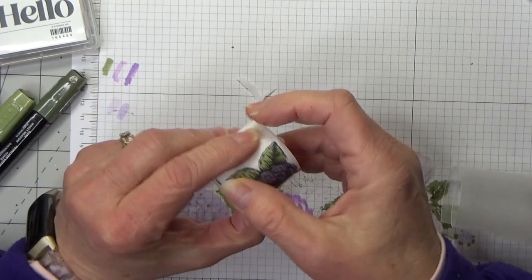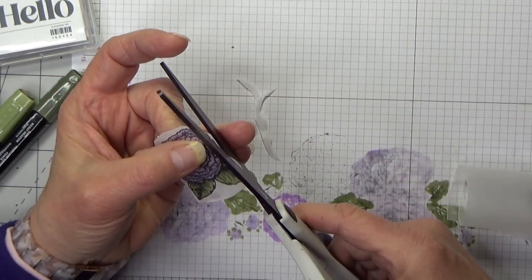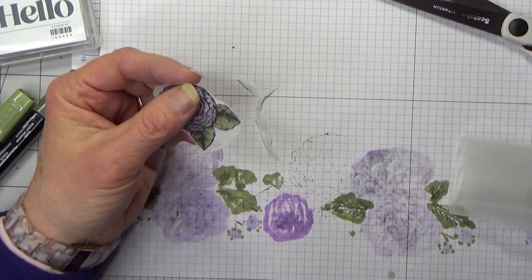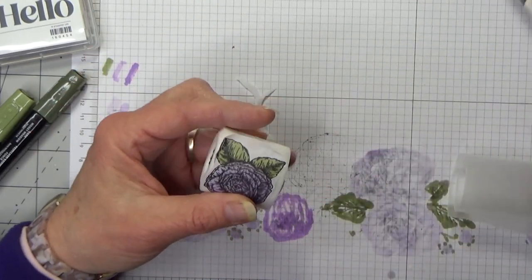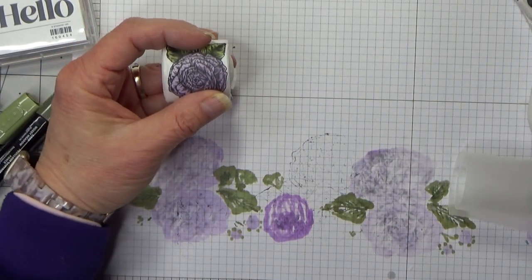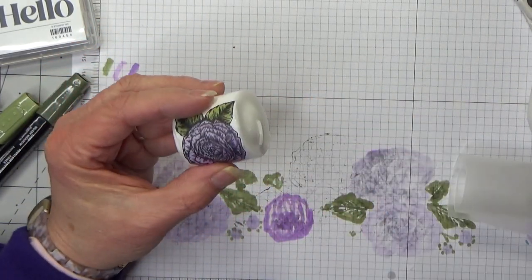I might need to cut a little bit more off around the leaves. There. Okay. Make sure your tissue paper fits within your candle.